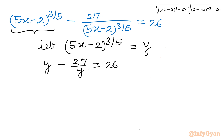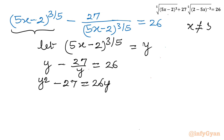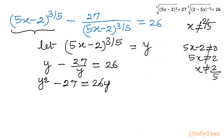Multiplying both sides by y gives y squared minus 27 equal to 26y. Note that y is non-zero, meaning 5x minus 2 cannot be zero, so x cannot equal 2 over 5. Bringing all terms to one side: y squared minus 26y minus 27 equal to 0.